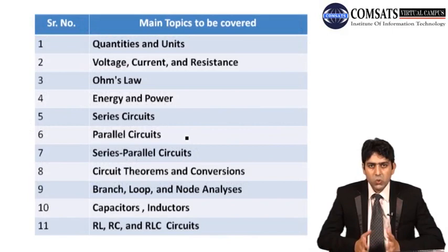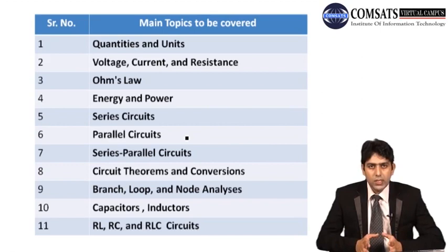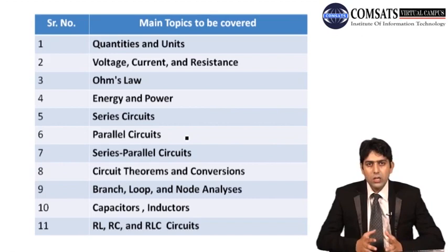The main topics of this course — I have divided it into 11 topics, and I will complete these 11 topics in 30 lectures. First, the topic is Quantities and Units, where we will see which basic quantities and units are used in ECA. The second topic is Voltage, Current, and Resistance — we will see basic definitions and their units. The third topic is Ohm's Law, which we will study in detail.